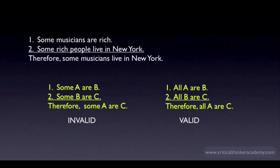For most purposes, this is all you really need to know about categorical arguments that use 'some.' The two forms that we've looked at are both invalid, and this will generally be the case when reasoning with generalizations of the form 'some A or B.' I would add that there are valid argument forms that use 'some,' but they tend to be awkward and not worth memorizing.